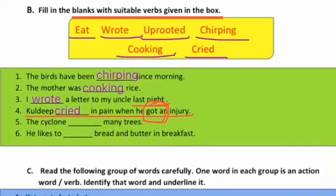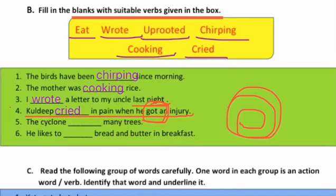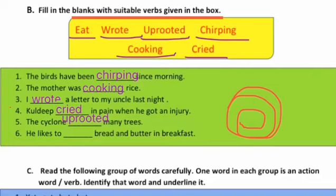Ab: 'Cyclone ___ many trees.' Cyclone ek tarah ka toofan hota hai jo ghoomavdar hota hai, aur jo bhi raaste mein aata hai use ukhaad deta hai. So cyclone ne many trees ko 'uprooted' kar diya — jad se ukhaad diya. And the last one: 'He likes to ___ bread and butter in breakfast.' Voh breakfast mein bread aur butter khana chahta hai — khana pasand karta hai. So yahan aayega 'eat'. To clear ho gaya: chirping, cooking, wrote, cried, uprooted, and eat.